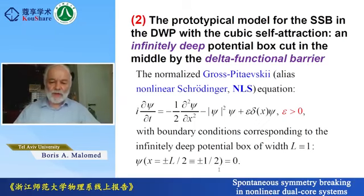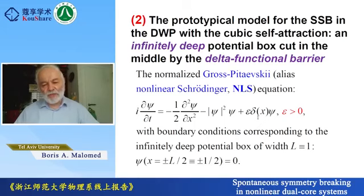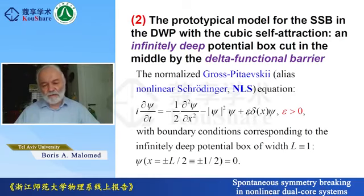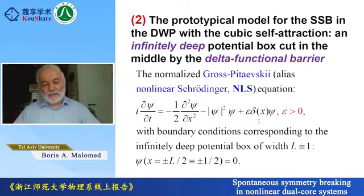We also have a potential inserted in the middle of the potential box, which splits the box into halves. Epsilon is a positive parameter, so this is a potential barrier. For the analytical approach it is convenient to take the limit case when the potential barrier is infinitely tall and infinitely narrow, approximated by the ideal mathematical delta function. This potential barrier splits the potential box into two mutually symmetric parts.